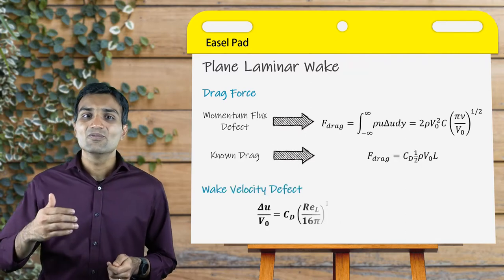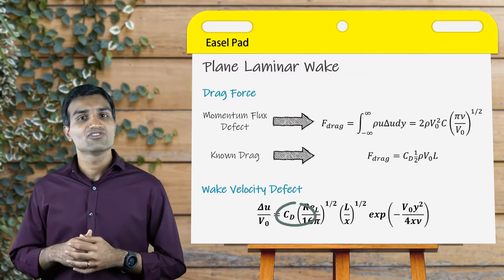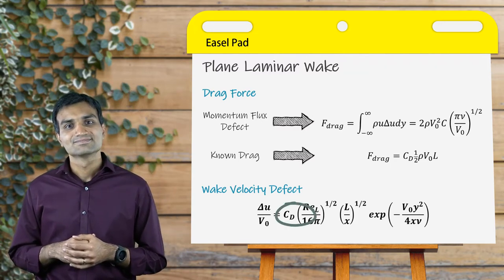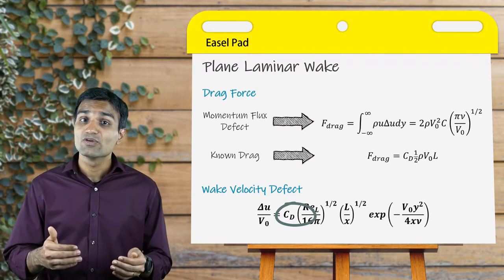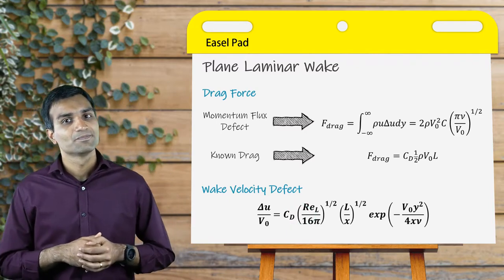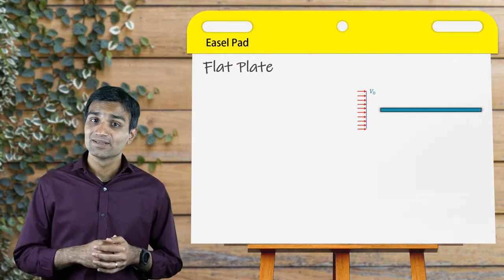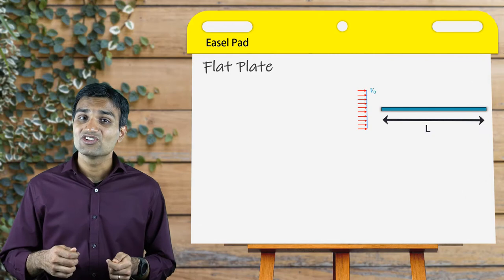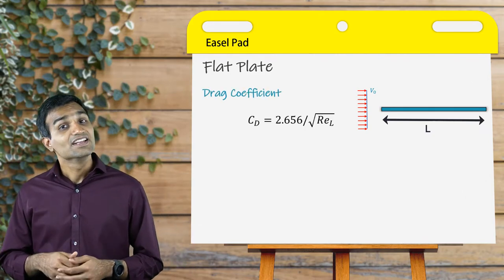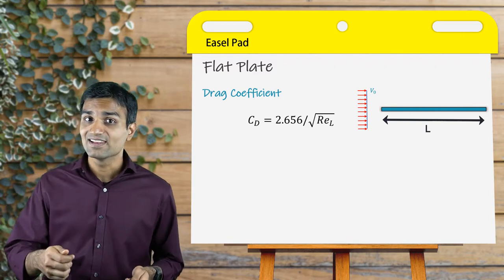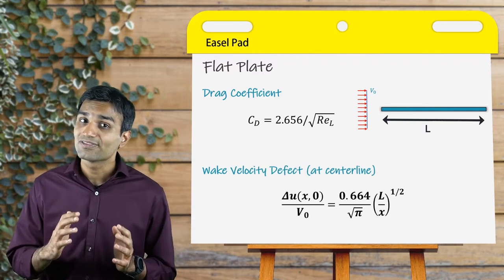It is observed that the wake velocity defect is proportional to the drag coefficient. To solve for the velocity defect, we need to know the value of the drag coefficient. For example, in the case of a flat plate, the drag coefficient is given by the following equation. Replacing this in the above analysis, we obtain the wake velocity defect for a flat plate.